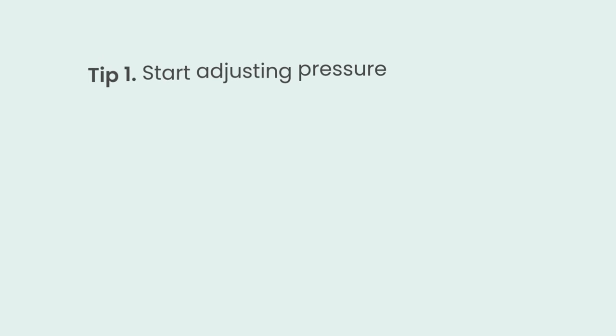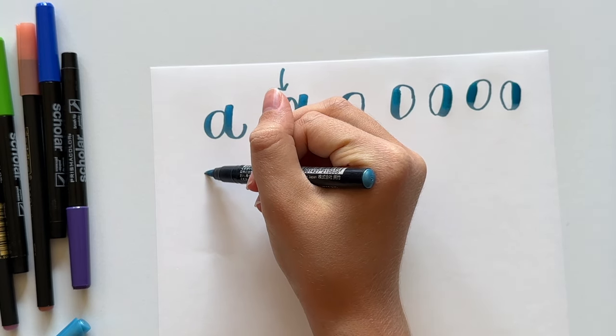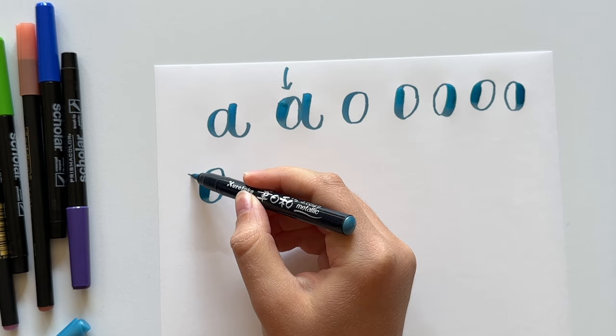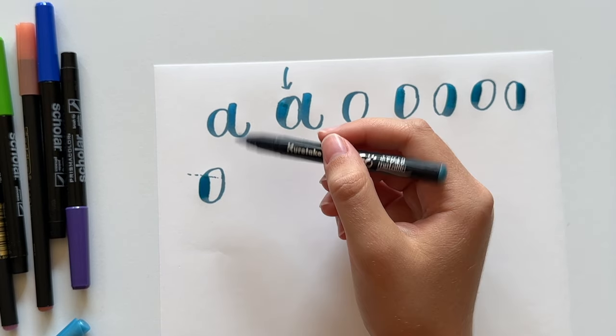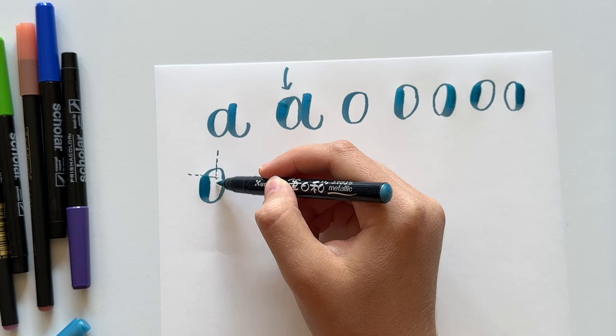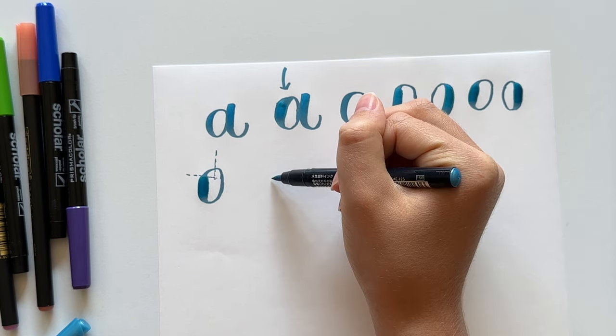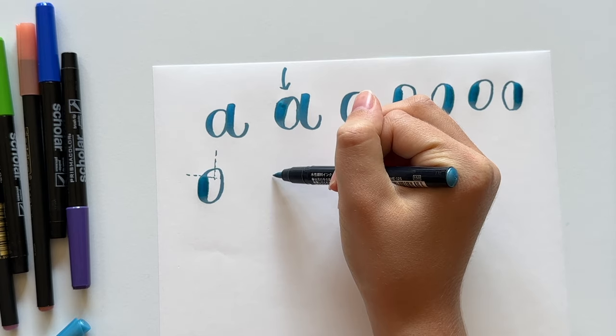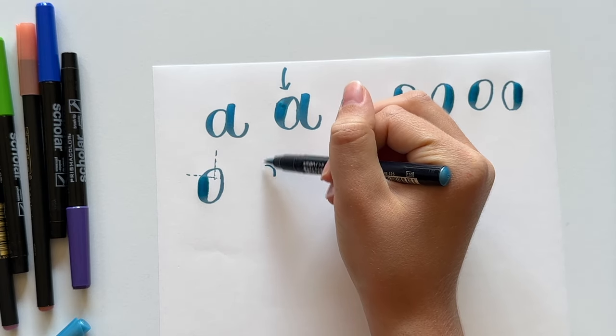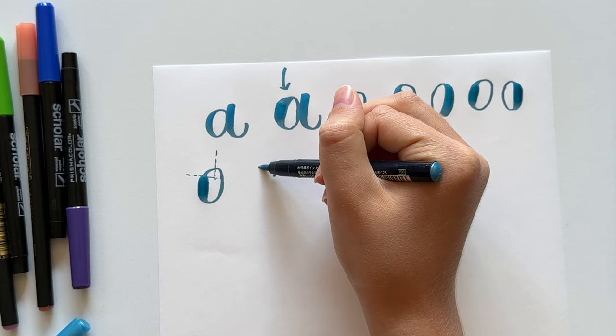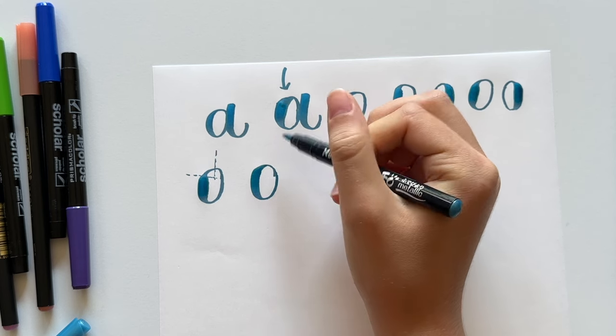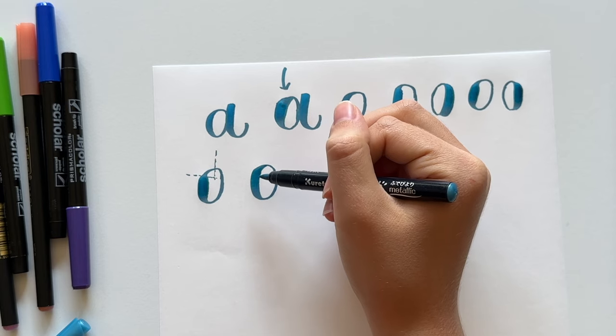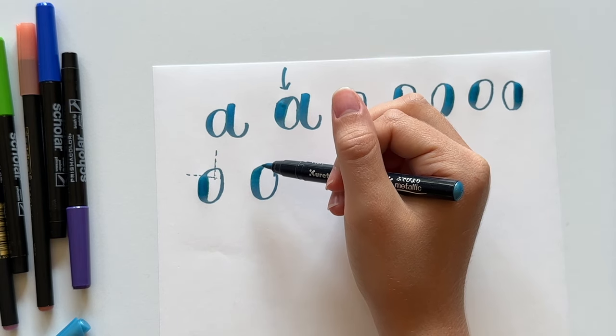And one simple way we can do this is by starting the transition a little bit sooner than we think we need to. So instead of realizing right about here that we need to be at heavy pressure and then suddenly adding it, let's instead start adding the pressure more like here. So that's about where we should start adding this pressure so that we can gradually transition. So right about here start slowly gradually adding the pressure so that by the time we come around to the side of the oval we're already at full pressure. So starting earlier gives us time to make that transition gradual and smooth.